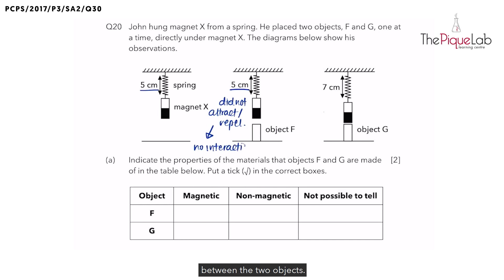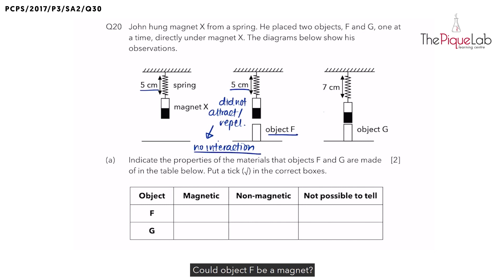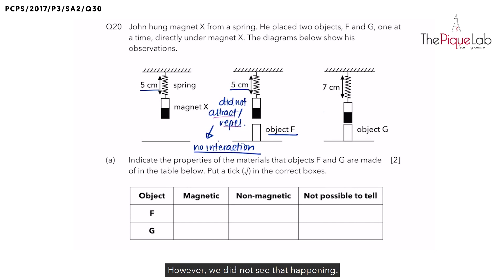There was no interaction between the two objects. So what can we conclude about Object F? Since there was no interaction, could Object F be a magnet? If it was a magnet, it would have either attracted or repelled. However, we did not see that happening — there was in fact no interaction at all, which means F is not a magnet.